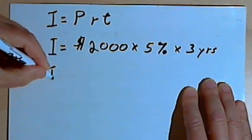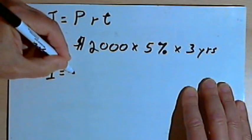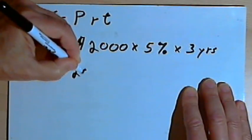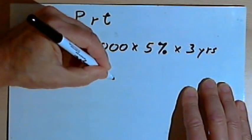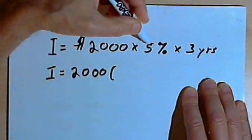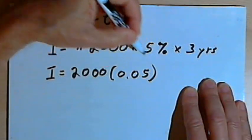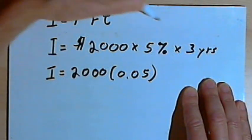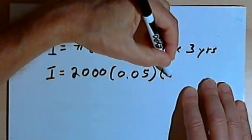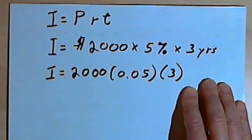So this is going to become I, the interest, equals 2,000. We want to multiply that 2,000 by 5 percent, expressed as a decimal. That's going to be 0.05. And then we'll multiply that by 3 for the 3 years.